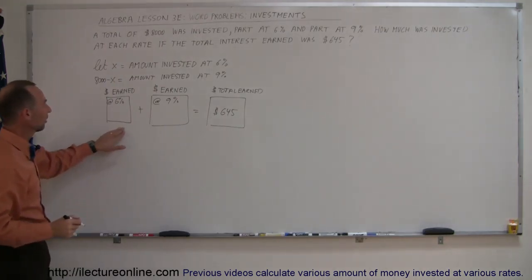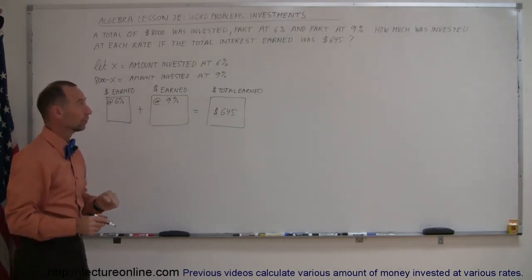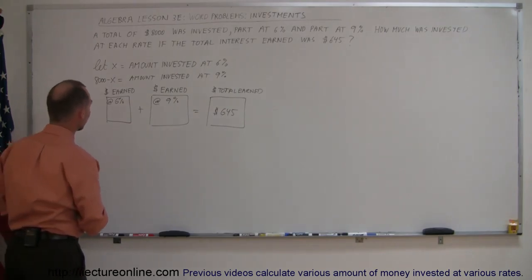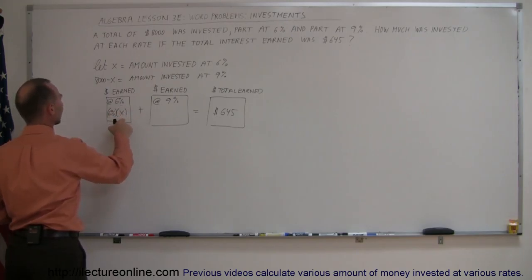So the amount of money earned at 6% plus the amount of money earned at 9% must equal the total amount of money earned. How do you calculate the dollars earned at 6%? You multiply the rate of return, 6%, times the amount that was invested, X.